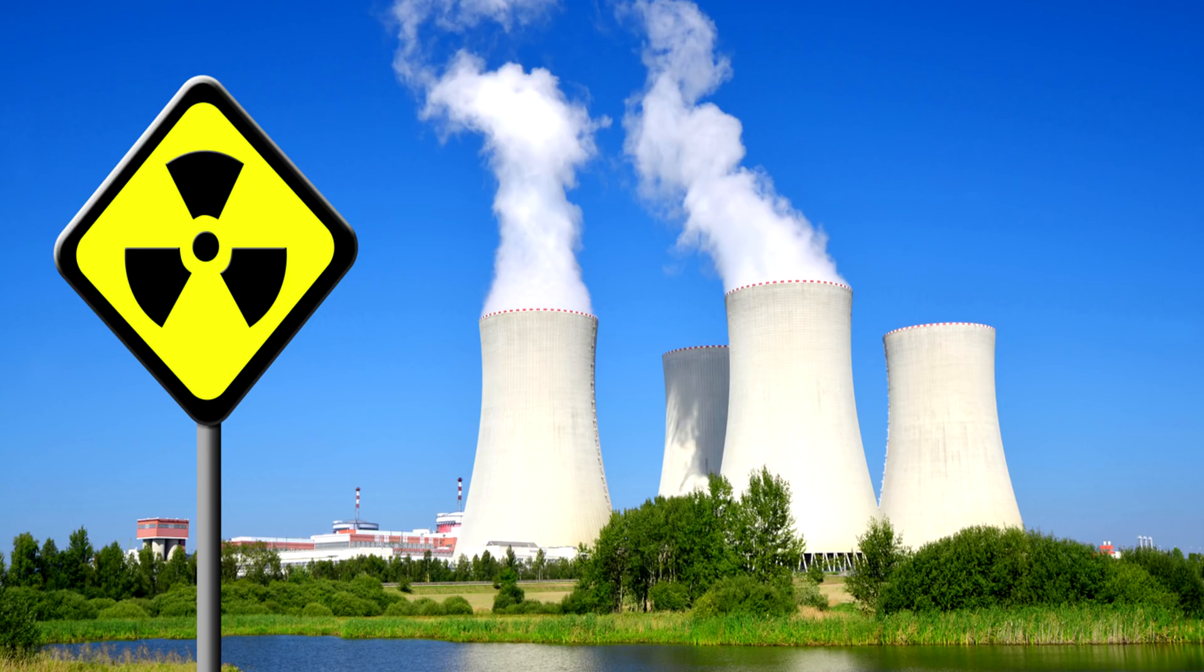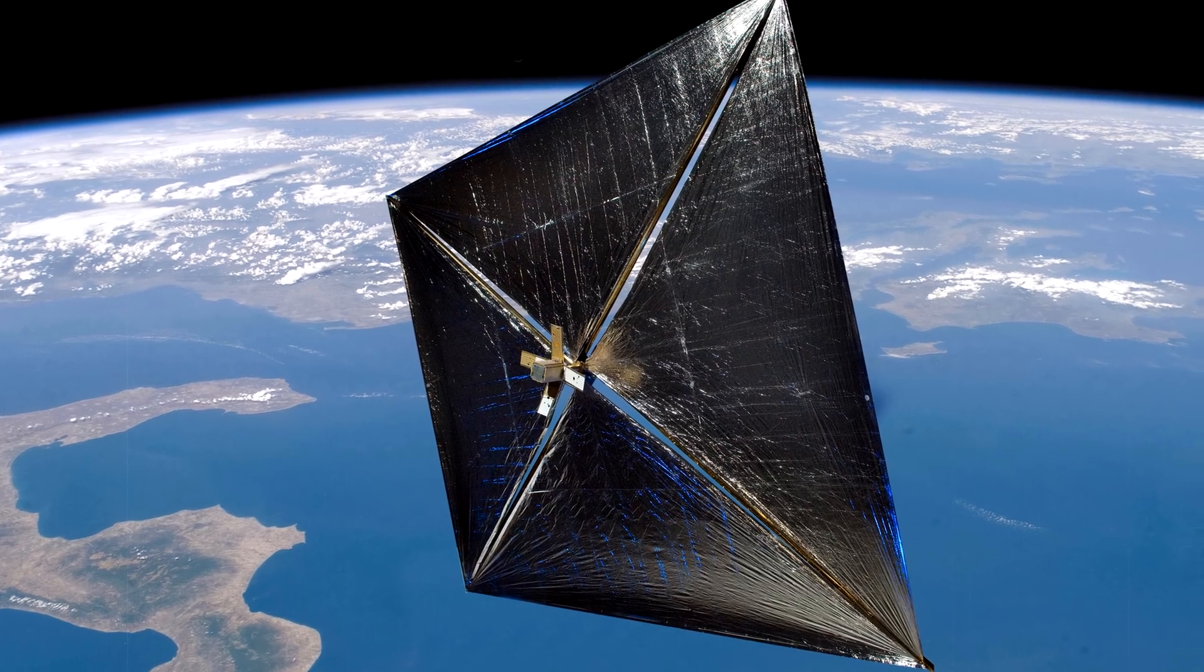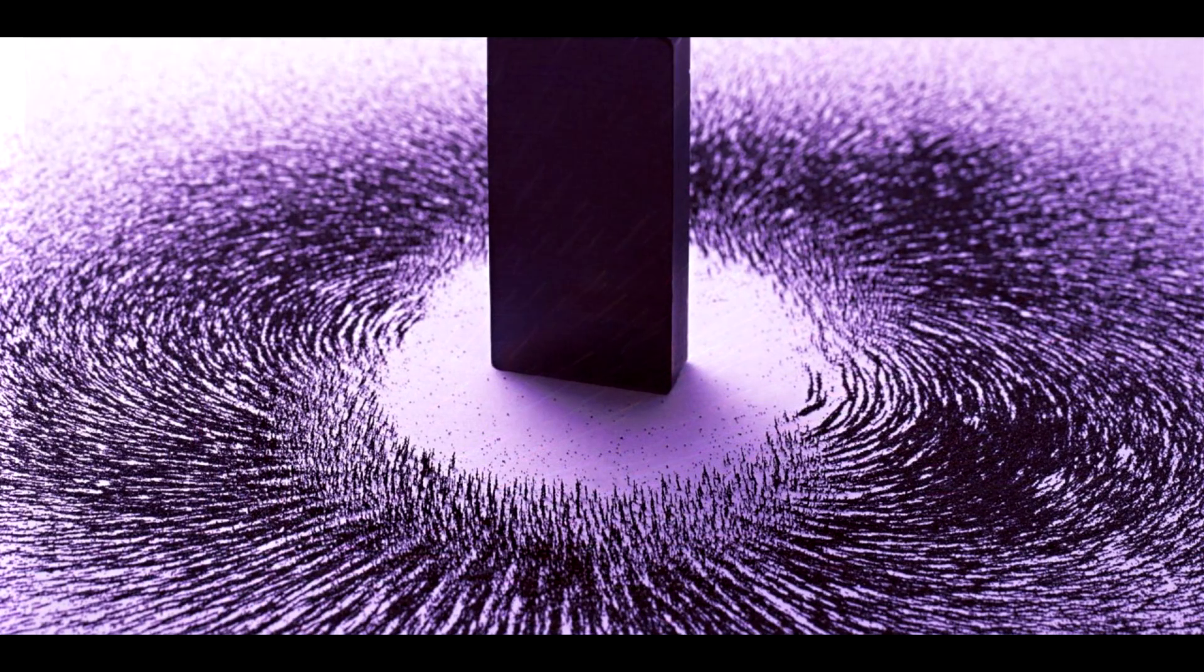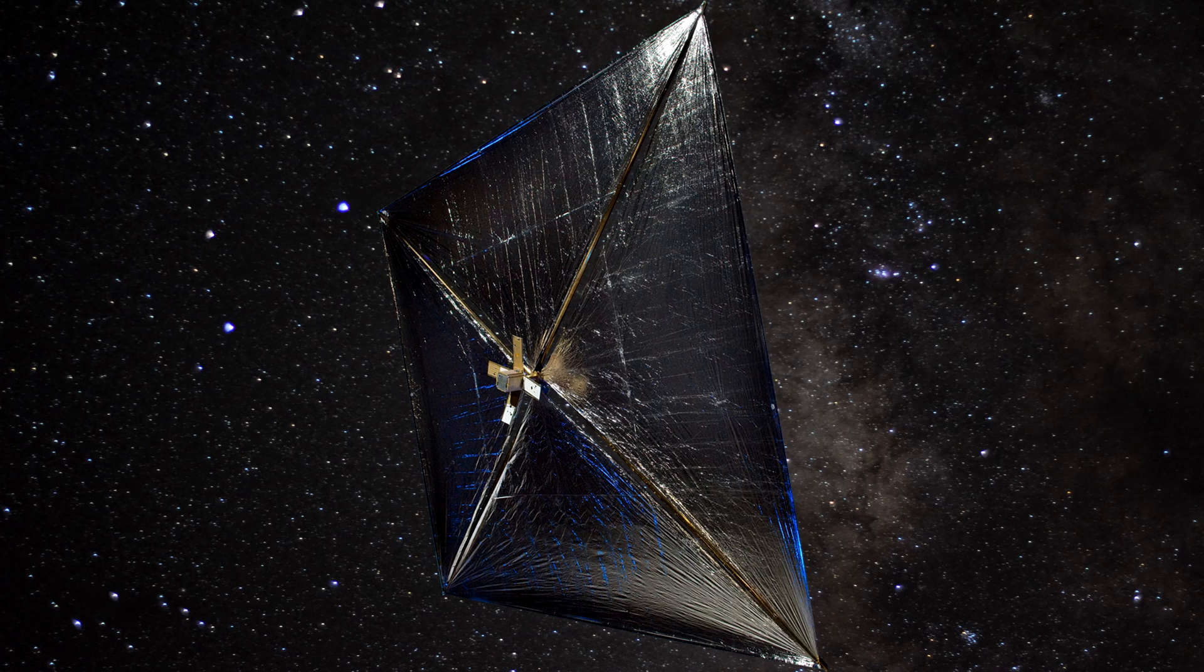Starshot already stands out from the other projects for not using any form of nuclear energy source. Instead, Starshot will be using photon sailing. Photons are the carrier particles of the electromagnetic force. As massless particles, photons are only able to move at the speed of light. This means they carry lots of kinetic energy which they can transfer to an object such as a spacecraft upon collision.